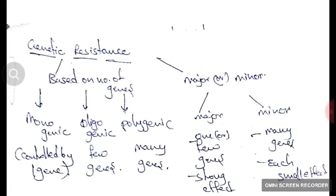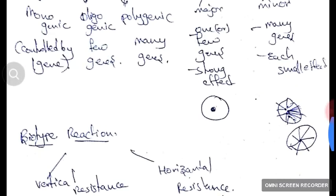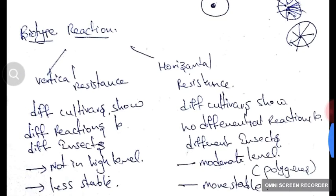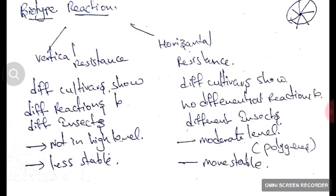Major genes means one gene or few genes show a strong effect. Minor resistance means many genes show small individual effects. The next type is biotype reaction, which is of two types: vertical resistance and horizontal resistance. In vertical resistance, different cultivars show different reactions to different pests.